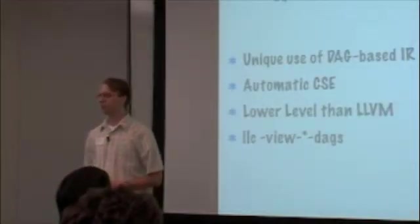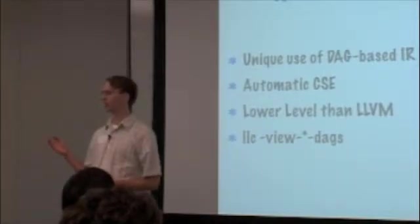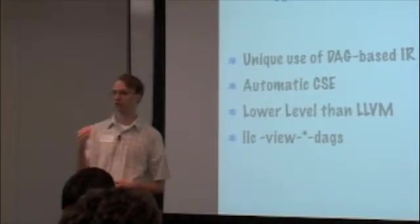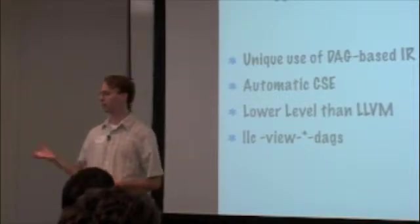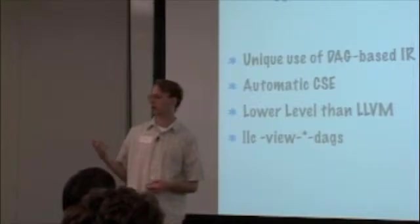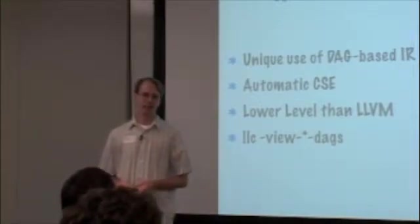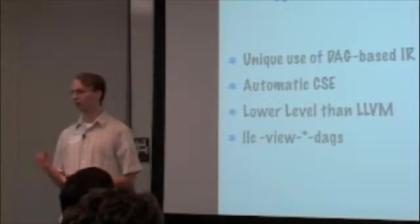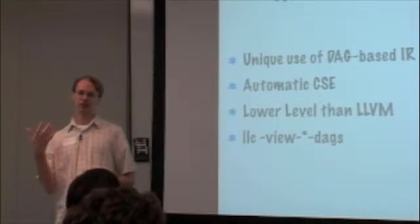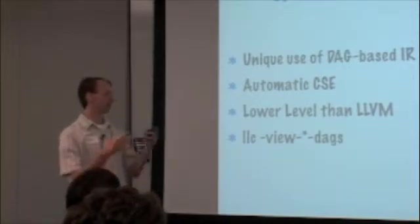The LLVM selection DAG is somewhat unique among compilers in that we use the selection DAG. There is no sequence of instructions at this point. In order to get from this form into machine instructions, we have to do scheduling. There's no option to avoid scheduling because all we have here is a graph with no order. The selection DAG does automatic CSE. So when you create a node, it will check to see if there's already another node with the same operands and the same opcode, and it will reuse that node instead of creating a duplicate node.